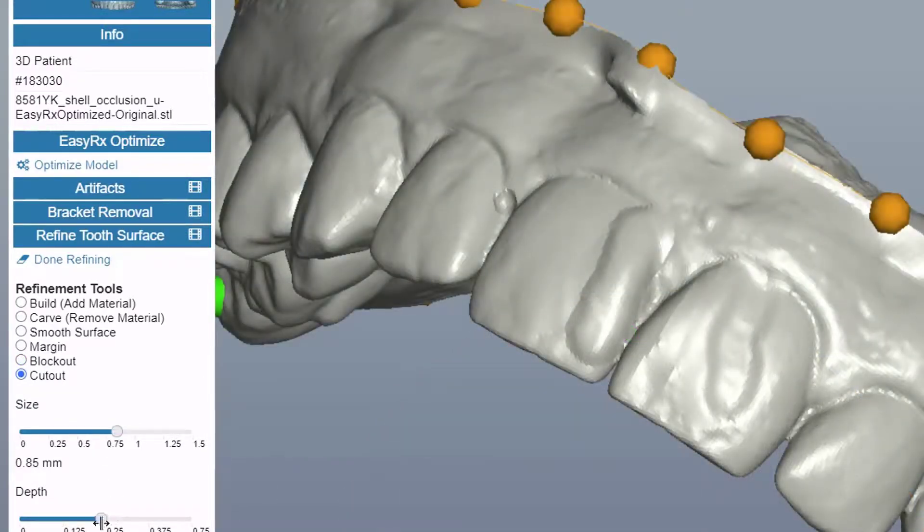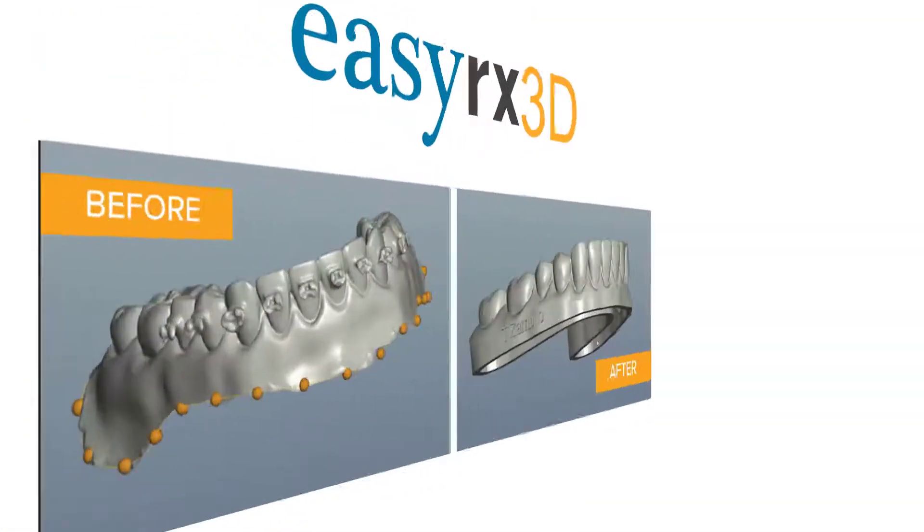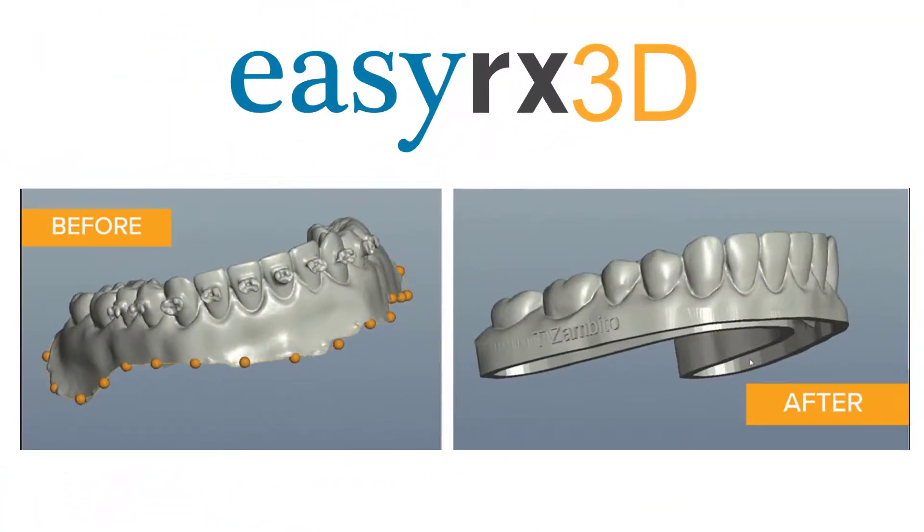Cut out, on the other hand, is used when adding a bit of retention by removing some of the gum for, say, a clasp or an invisible retainer. All of these refinement tools are available in EasyRx 3D with EasyRx 3D Bracket Removal.